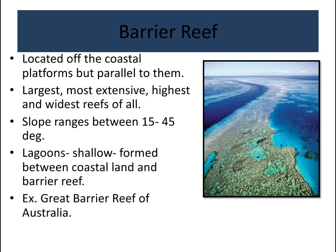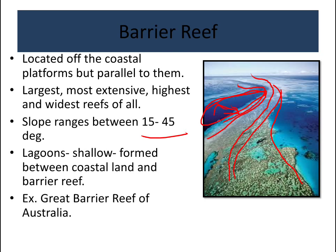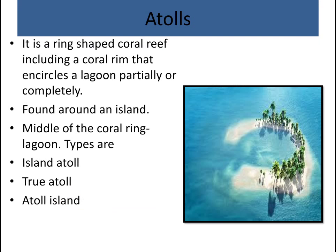Barrier reefs are located off the continental margin, with a space between the reef and the coast, where lagoons are formed. They are the most extensive and highest reefs, growing parallel to the coastal region. The slope ranges between 15 to 45 degrees. The example is the Great Barrier Reef. Compared to fringing reefs, barrier reefs are larger, wider, and more extensive.